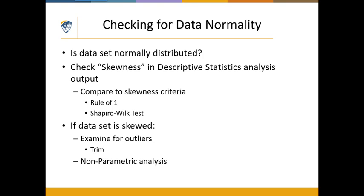The primary way we assess normality is to run descriptive statistics, and part of that output will be a skewness score. Skewness can be either positive or negative, and this score gives us an idea of how much our data might deviate from normal. A perfectly normal distribution would have a skewness score of zero. As that value gets larger away from zero — more positive or more negative — the more that data deviates from the normal distribution.